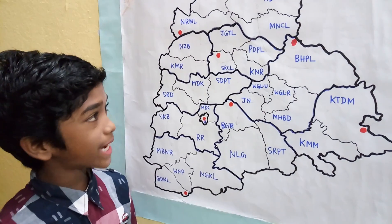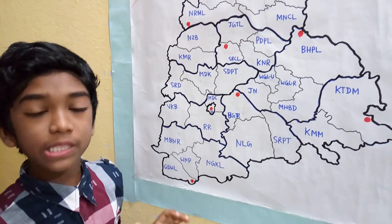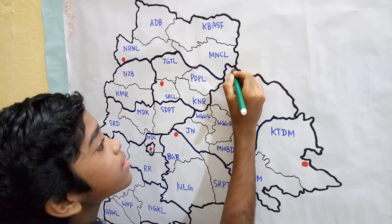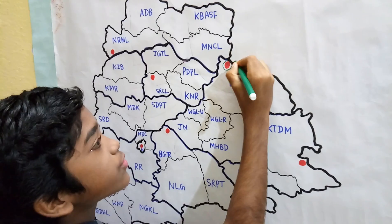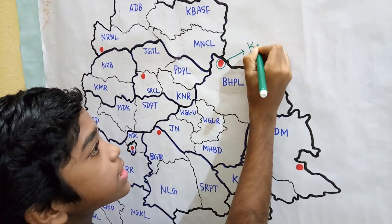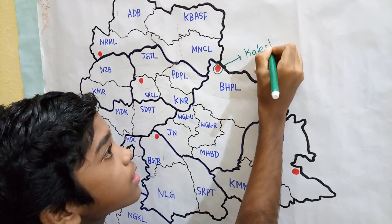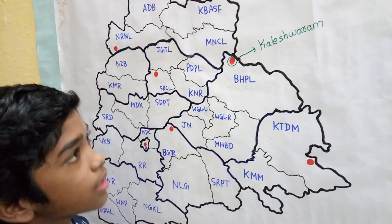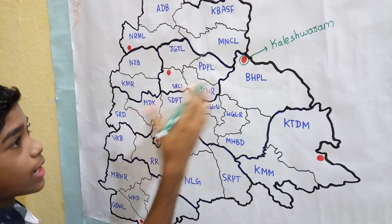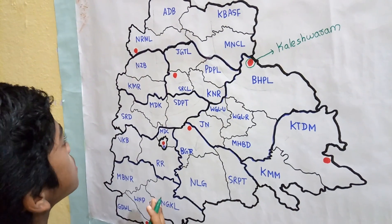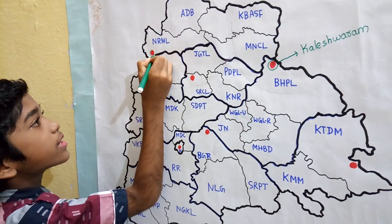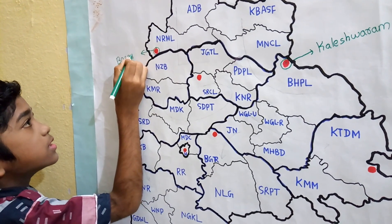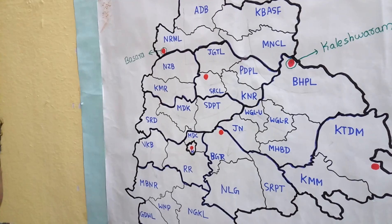Now we locate 6 famous temples and a famous historical monument. Let's locate them. First, this one — it is Kaleshwaram, the Kaleshwara Mukteshwara Temple, located in Jaishankar Bhupalpalli district. Next, this one — it is Basara, the Sri Gnana Saraswati Temple.